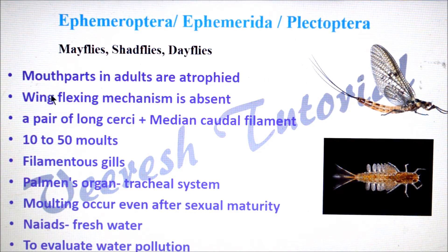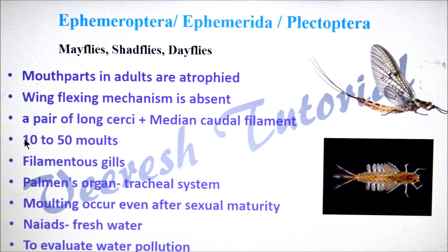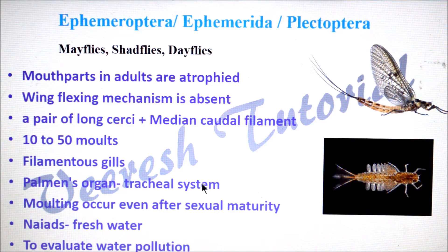If you look at the order level characters, mouth parts in adults are atrophied. Wing flexing mechanism is absent. They have a pair of long cerci along with a median caudal filament. Immature stages are called as niads and they undergo 10 to 50 moults — that is the largest number of instars present among the insects. They respire through filamentous gills, and a palman's organ is present in the tracheal system. Moulting occurs even after attaining sexual maturity.